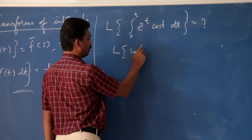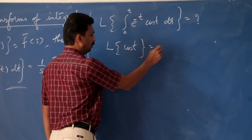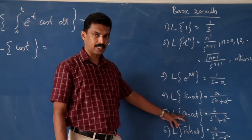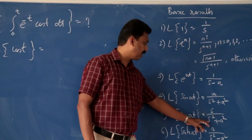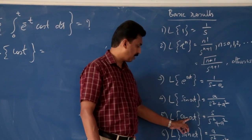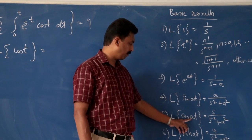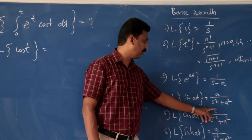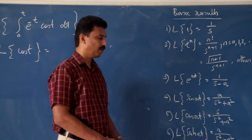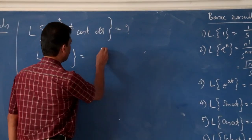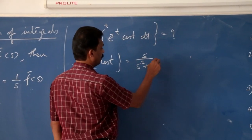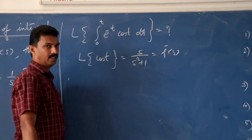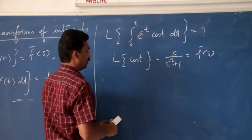First, we will find the Laplace transform of cos t. Using the basic result, the Laplace transform of cos(at) is s divided by s² + a². Replacing a by 1, we get the Laplace transform of cos t is equal to s divided by s² + 1. We call this F̄(s).